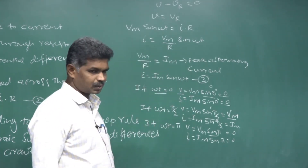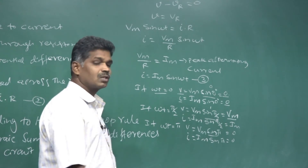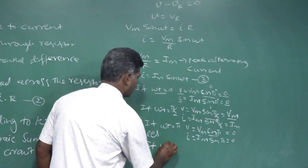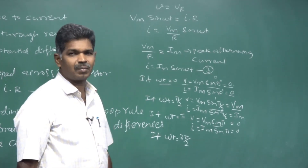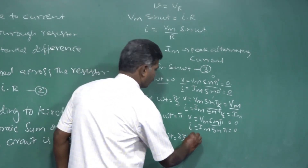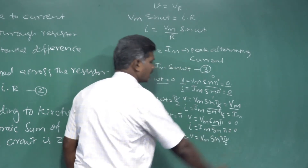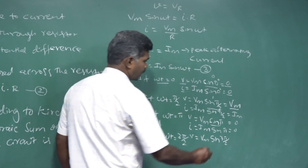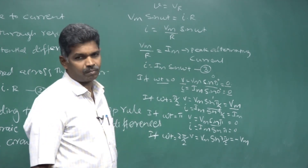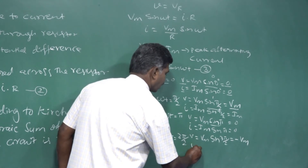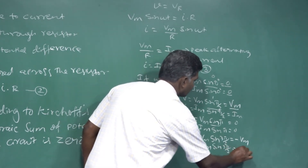The fourth case: ωt = 3π/2, which is 270 degrees. sin(270°) = -1. So V = VM sin(3π/2) = -VM - the peak value is negative. Similarly, I = IM sin(3π/2) gives minus IM. So at 270 degrees, both voltage and current have their negative peak values.